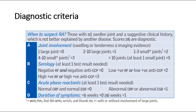This is the diagnostic criteria for rheumatoid arthritis. There are four main points: A — joint involvement, with more points awarded for smaller joints; B — serology, including rheumatoid factor (RF) and anti-CCP, where if both are positive there is the highest probability of rheumatoid arthritis; C — acute phase reactants like CRP and ESR, where elevated levels are more suggestive; and D — duration of symptoms, where six weeks or more is more suggestive. A total score of six or more is diagnostic of rheumatoid arthritis.